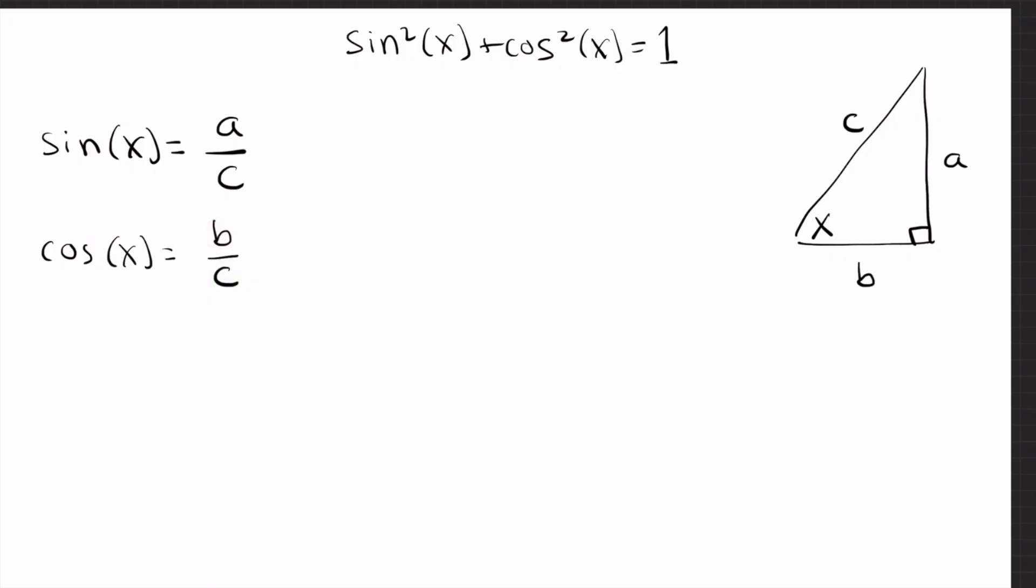Well, I don't care about sine and cosine. I care about sine squared and cosine squared. So let's take both of these and square both sides. If you do that, on the left you get sine squared. On the right you get a squared over c squared. And similarly for the next one, we get that cosine squared is b squared over c squared.